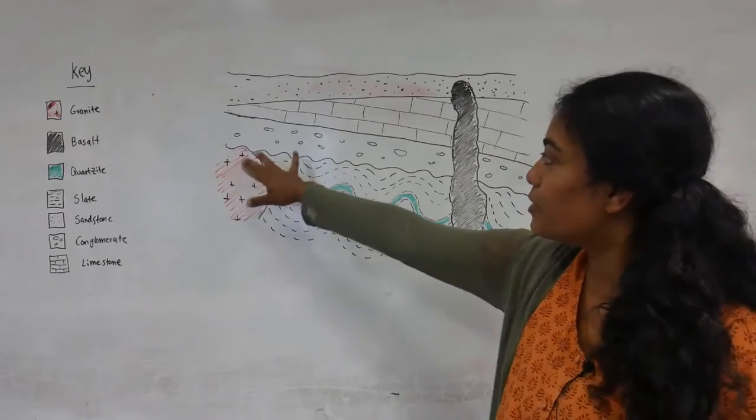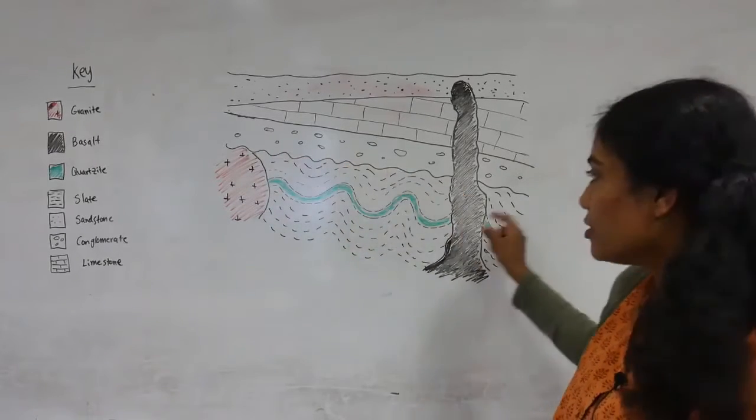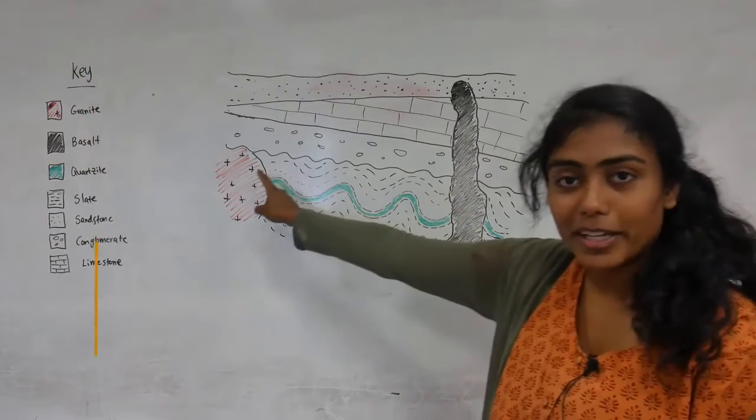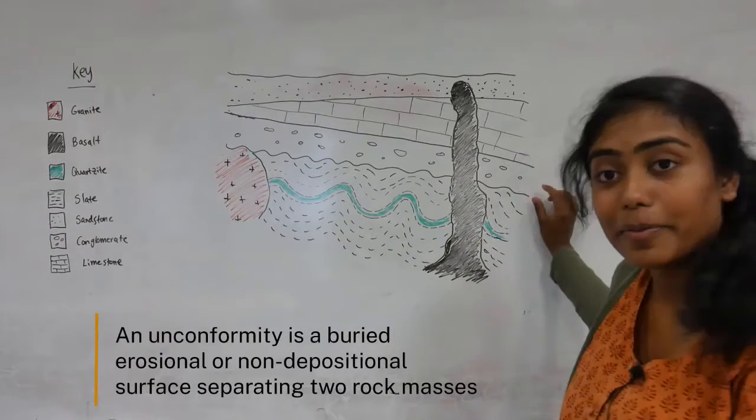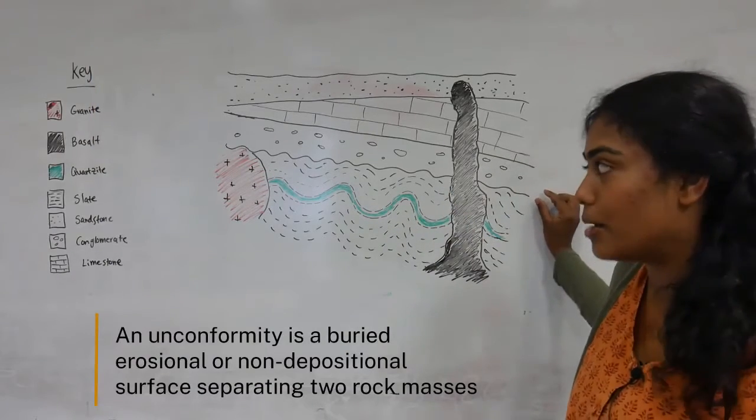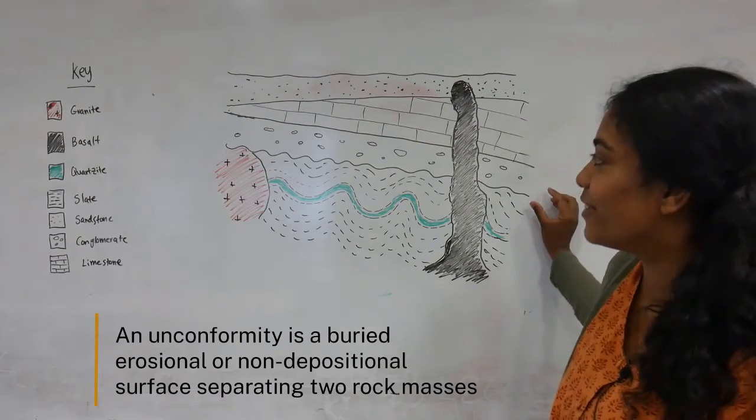Then all of this would have been eroded to create this unconformity here. So this represents a gap in time where we have rocks being lost from the geological record.